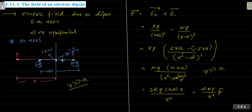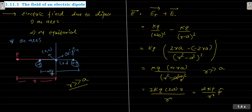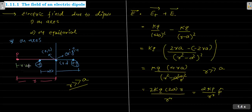The axis runs through the dipole and the equatorial is perpendicular to it. We take a point P at distance R from the center. The dipole moment P equals Q into 2a, where 2a is the distance between the two charges. So from the positive charge, the distance to P is R minus a, and from the negative charge, the distance to P is R plus a.